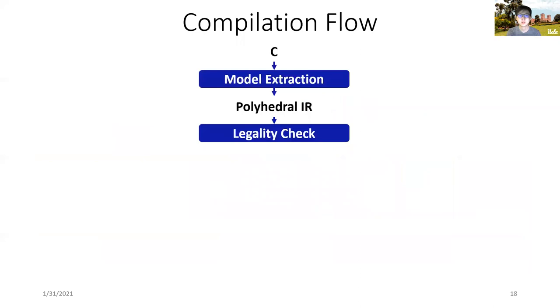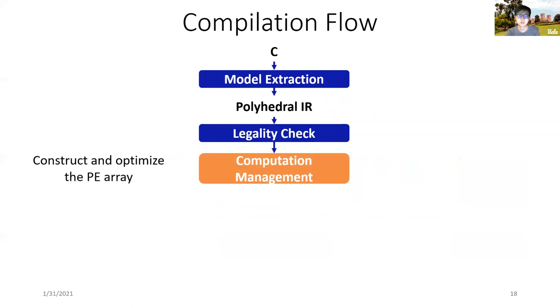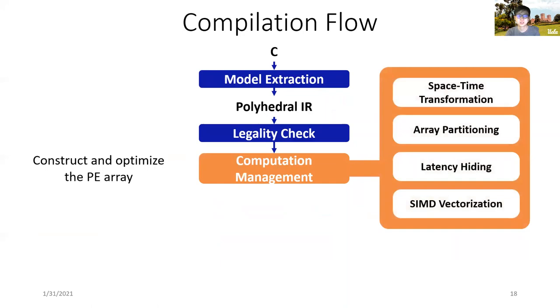The program will be first passed through the stage of computation management. This stage constructs and optimizes the PE array. Specifically, it contains four major steps, including space-time transformation, in which the program will be transformed to a systolic array using space-time mapping, array partitioning, in which the array is partitioned to smaller sub-arrays to fit limited on-chip area,